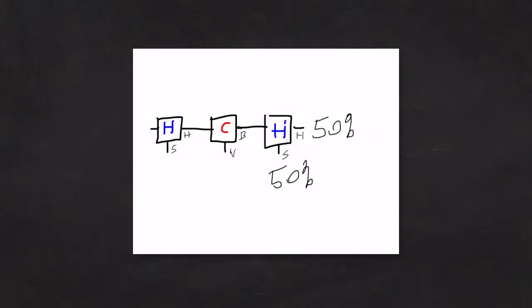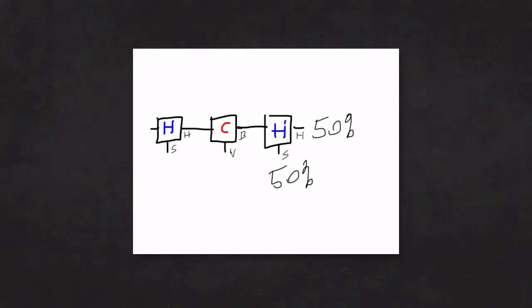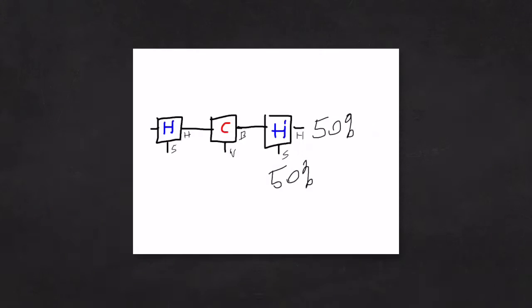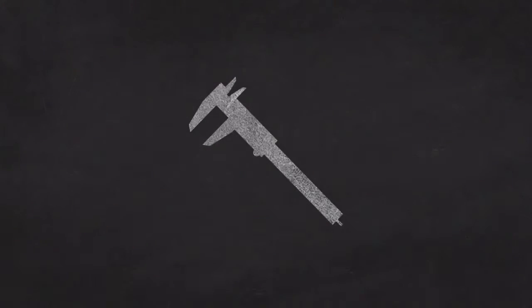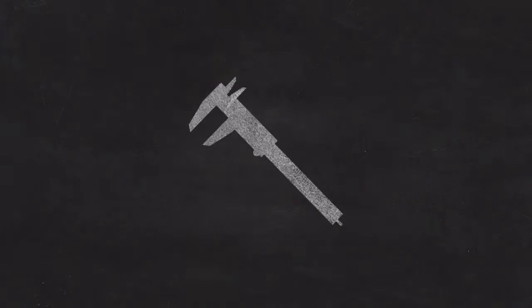We can reverse this the other way and start out with a color detector, which is fed into a hardness detector, and then back into a color detector, and we still find that 50% will be black and 50% will be white — despite the fact that the input from the first color detector was only one color. One conclusion we might draw is that when we measure one property, say color, we're actually disturbing or changing the other property — in this case, hardness.